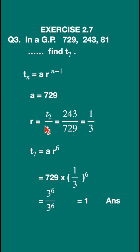Now let us substitute this here. t7, we want the 7th term, is equal to a*r^(n-1). n is 7, so n-1 is 6, so a*r^6. Now substitute: a = 729 multiplied by r = 1/3, giving (1/3)^6.